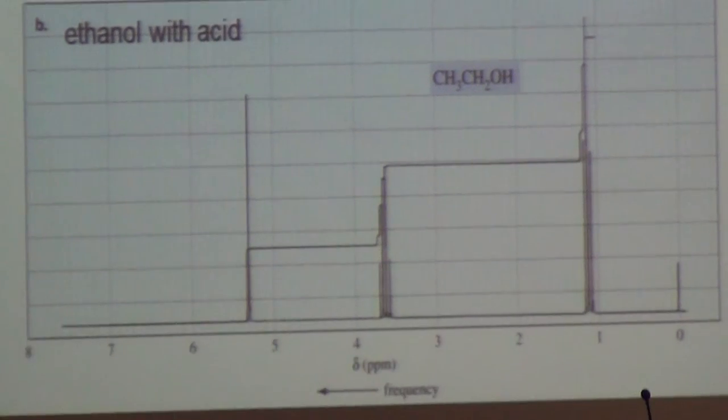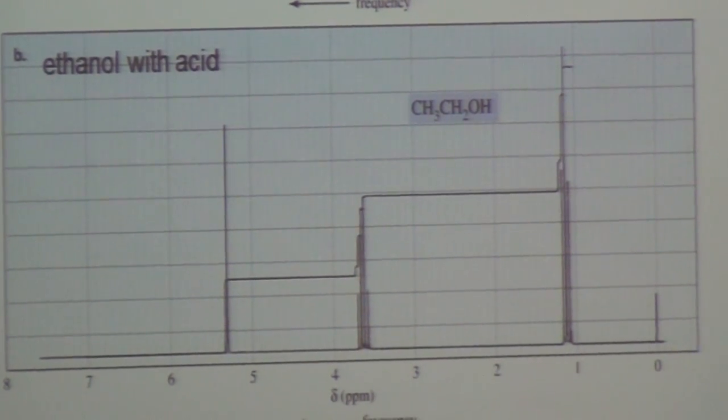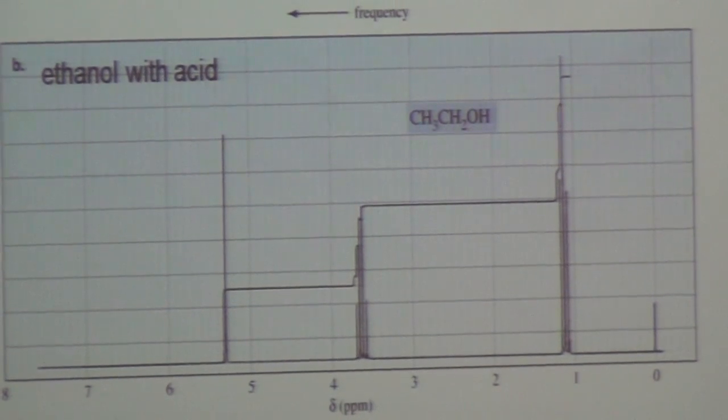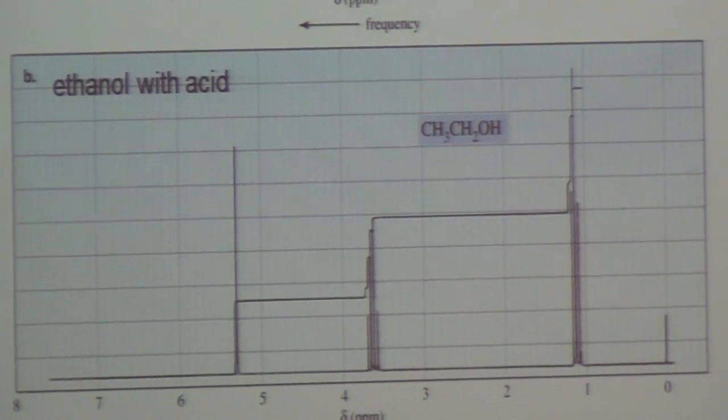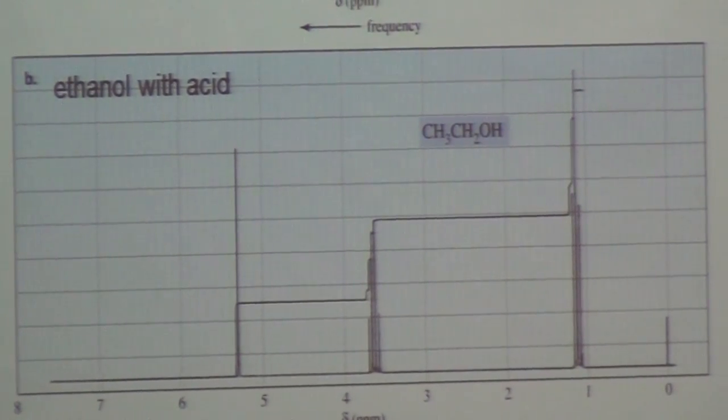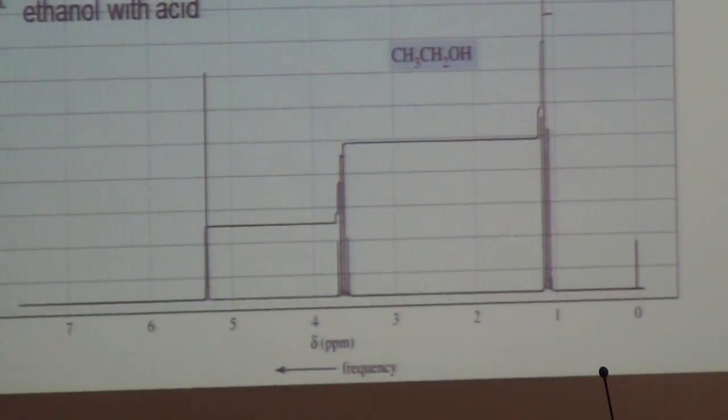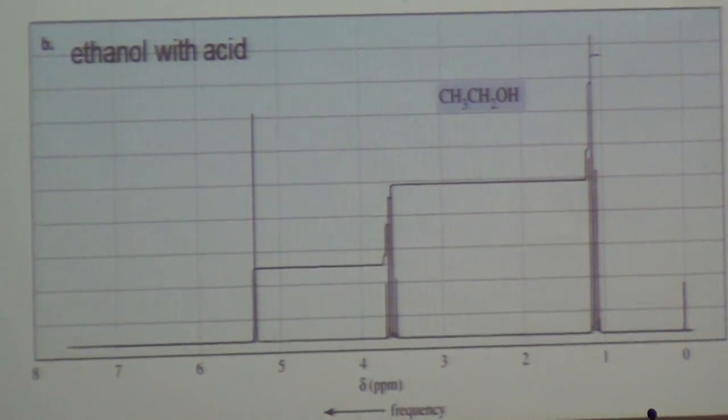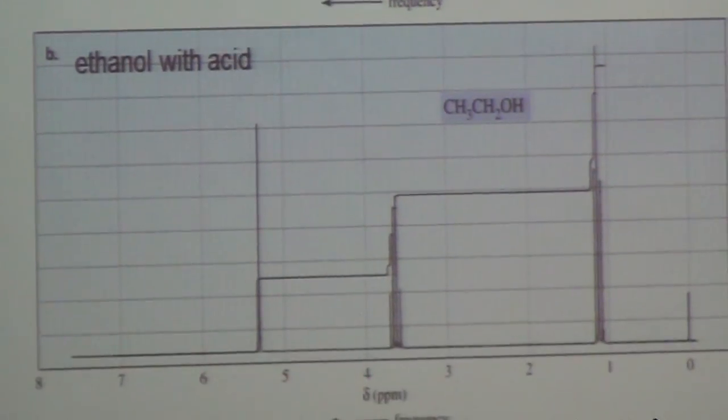Look at spectrum 2, also ethanol. But what has happened in spectrum 2? The methyl is no problem, still the same. But what happened to the 5.3 peak? It is no longer a triplet. It is now a singlet. And then what has happened to the 3.8 ppm peak? It is no longer as complicated as the one above. It simply got split into a bunch of four pieces.